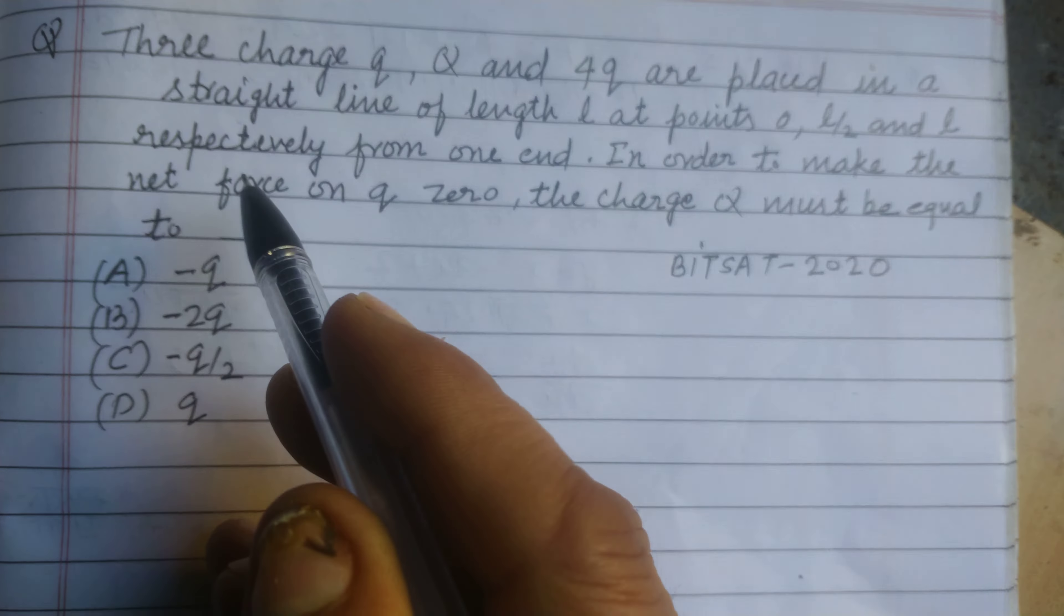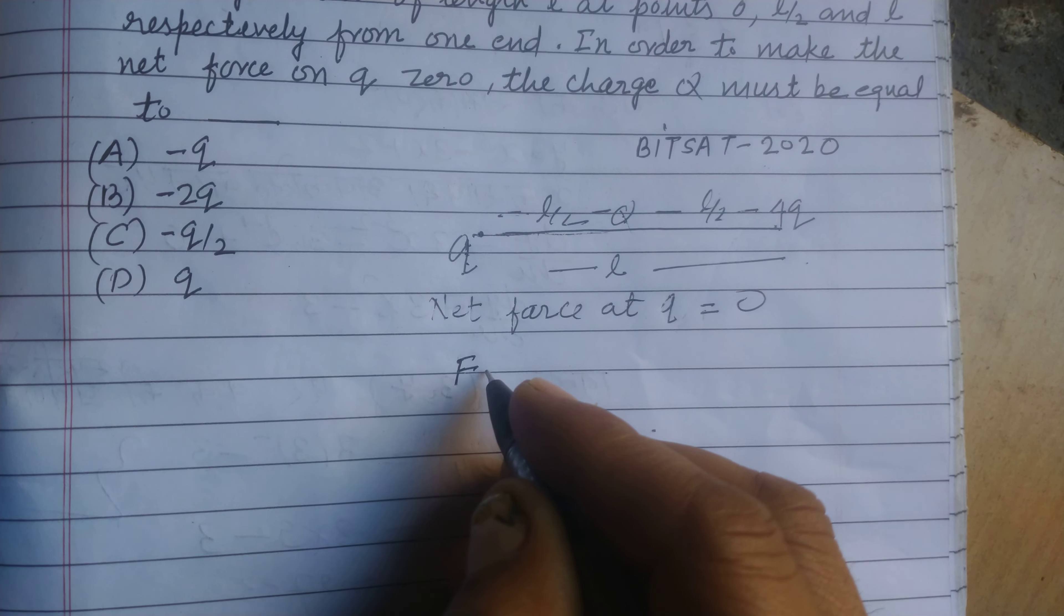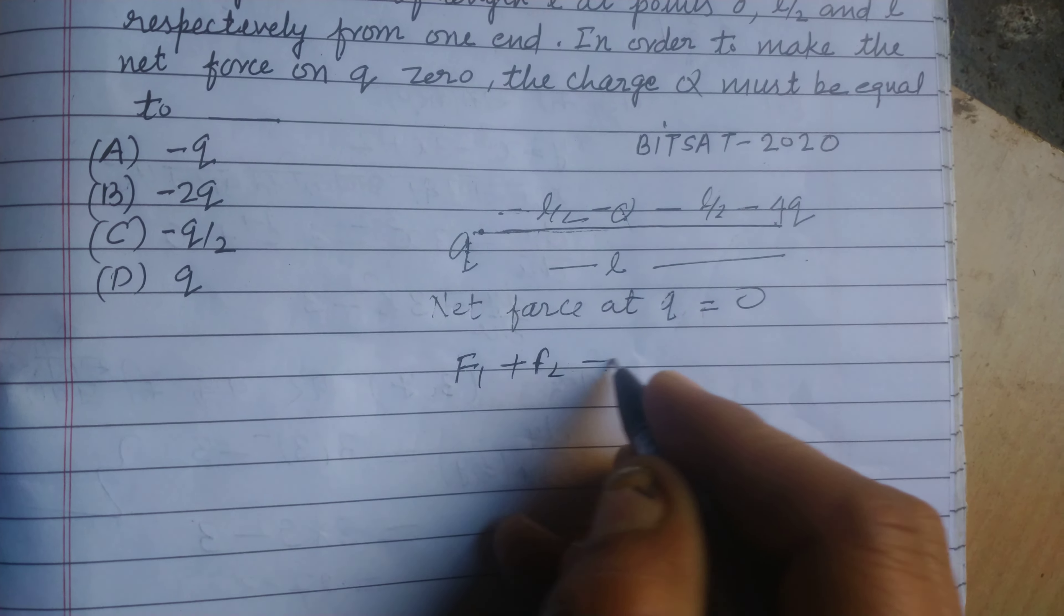The forces which are Coulomb forces from Q to Q and Q to 4Q. So F1 plus F2 equal to zero.